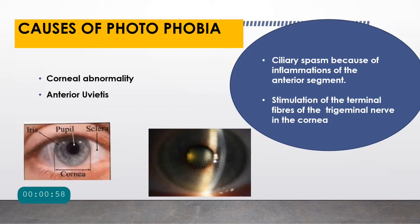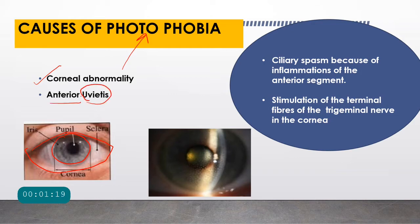What are the causes of photophobia? Photophobia causes are basically due to abnormality of two things. Number one is the cornea — the black part of the eye visible in this picture. Any abnormality in the cornea can cause photophobia. Number two is a problem in the uvea, and particularly the anterior uvea, which is formed by the iris and the ciliary body.